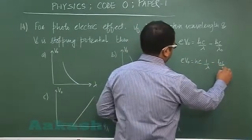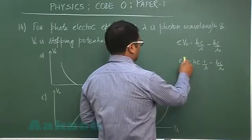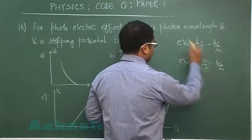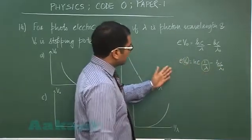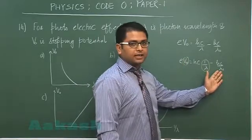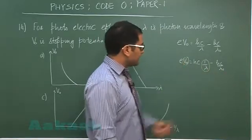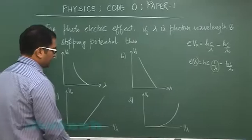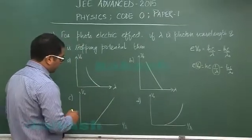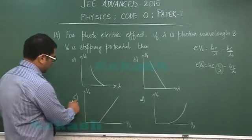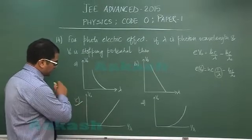This is y-axis, this is x-axis, so I will be getting an equation of straight line in the pattern y equals mx minus c. Therefore, for the graph of V0 versus 1 by lambda, that would correctly represent option number C.